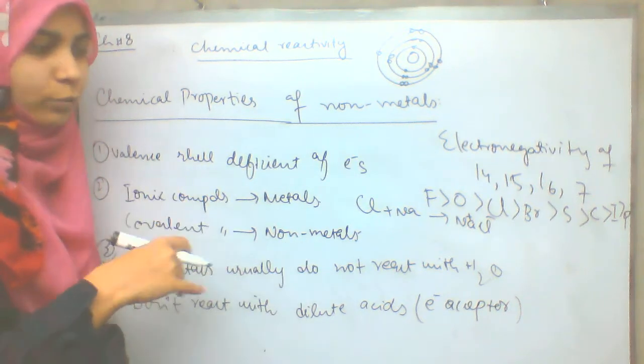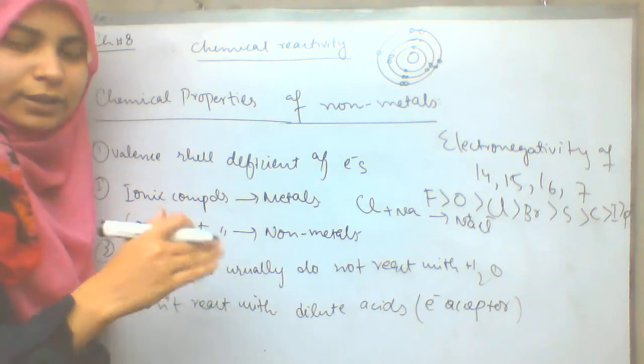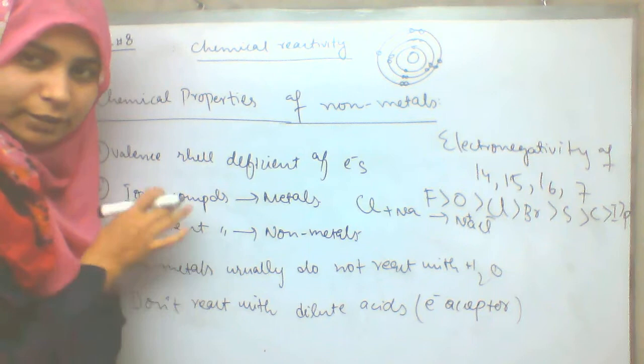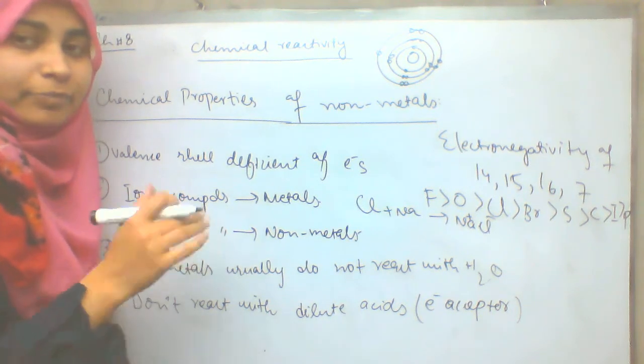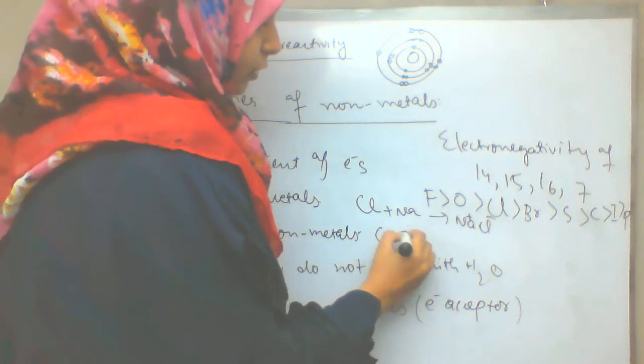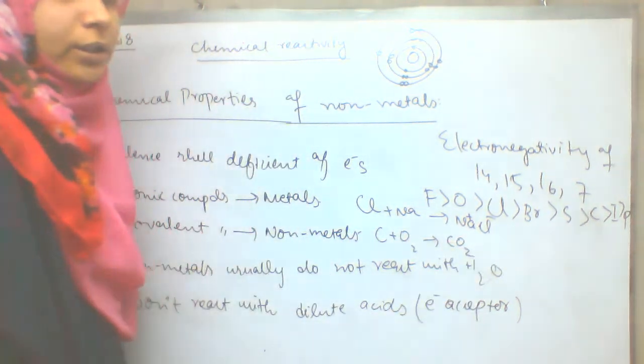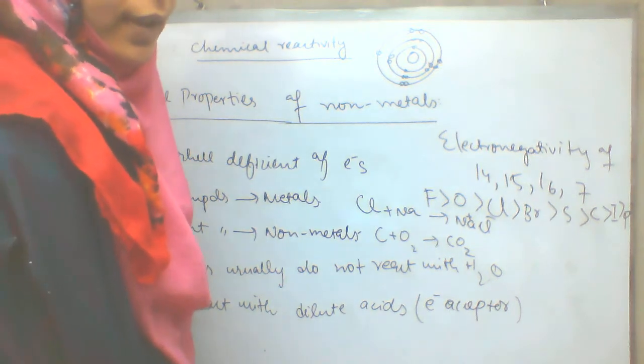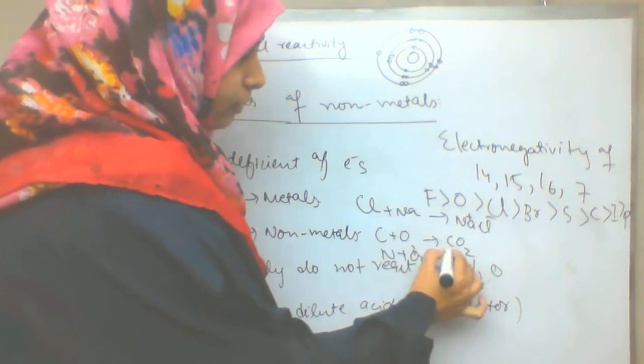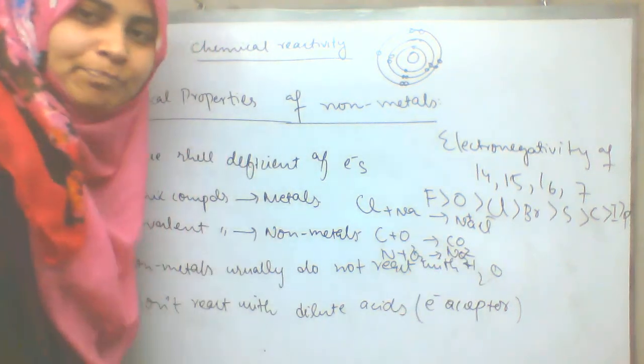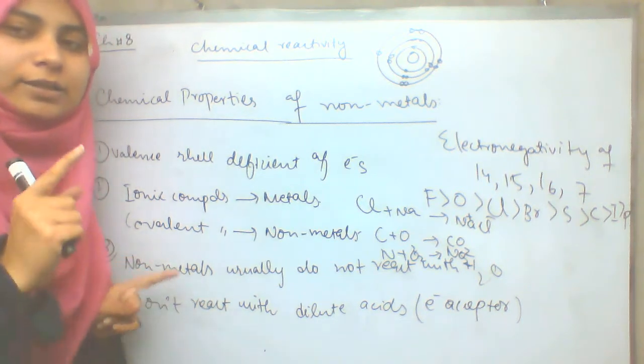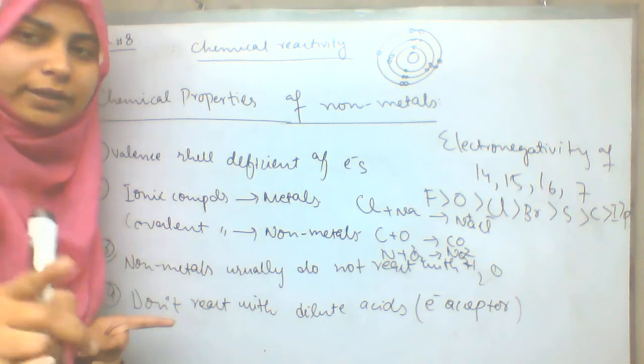If non-metals react with non-metals, it will be a covalent compound. Carbon and oxygen form carbon dioxide CO2. In this way, nitrogen is a non-metal and oxygen is also a non-metal. The two non-metals form dioxide. Non-metals with non-metals form covalent compounds, but with metals they form ionic compounds.